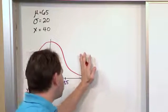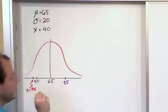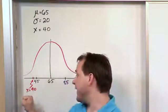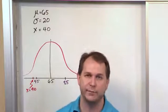We have drawn the original distribution. Now we want to draw the standard normal distribution and then we want to show where this value x equals 40 lies on that standard normal distribution.